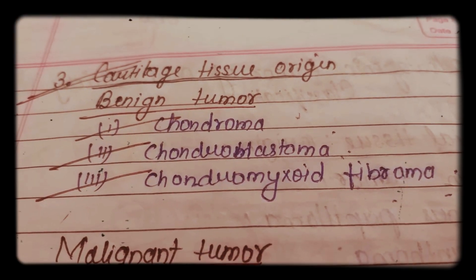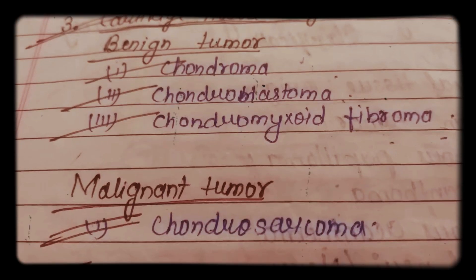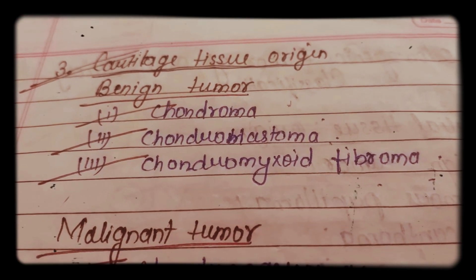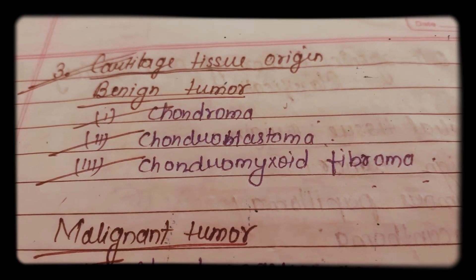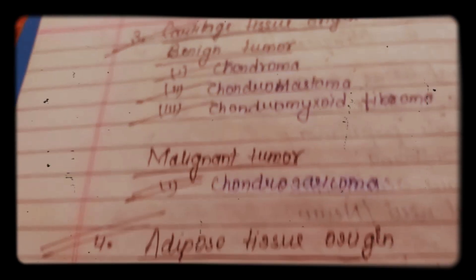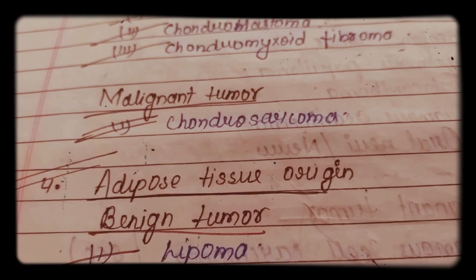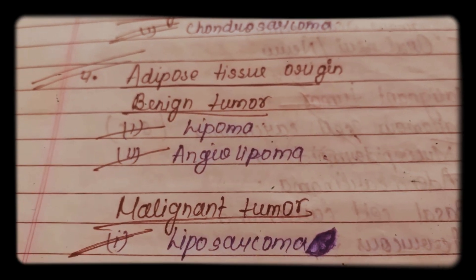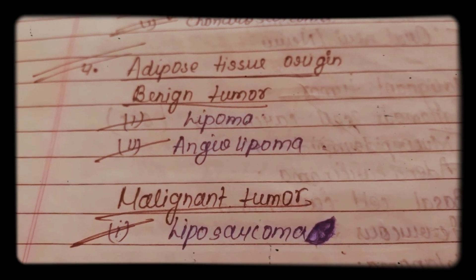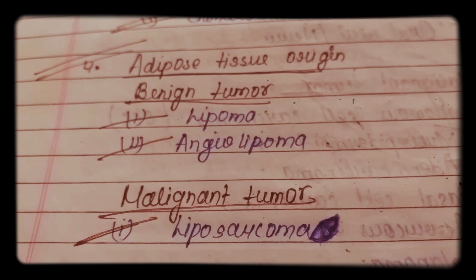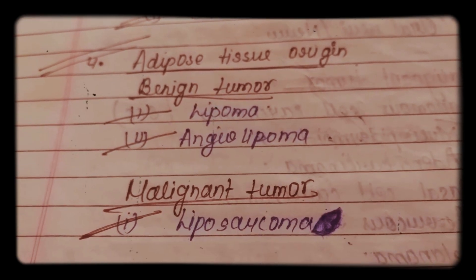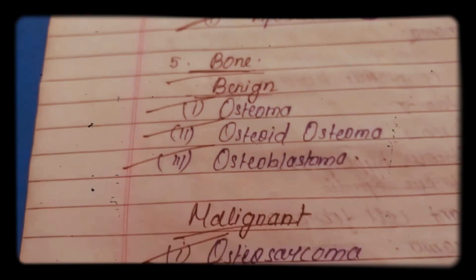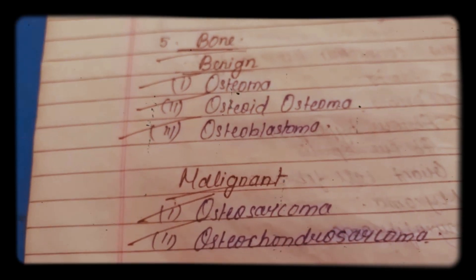The third type is cartilage tissue origin. Benign tumors include chondroma, chondroblastoma, and chondromyxoid fibroma. Malignant tumors include chondrosarcoma. The fourth type is adipose tissue origin. Benign tumors include lipoma and angiolipoma, while malignant tumors include liposarcoma.